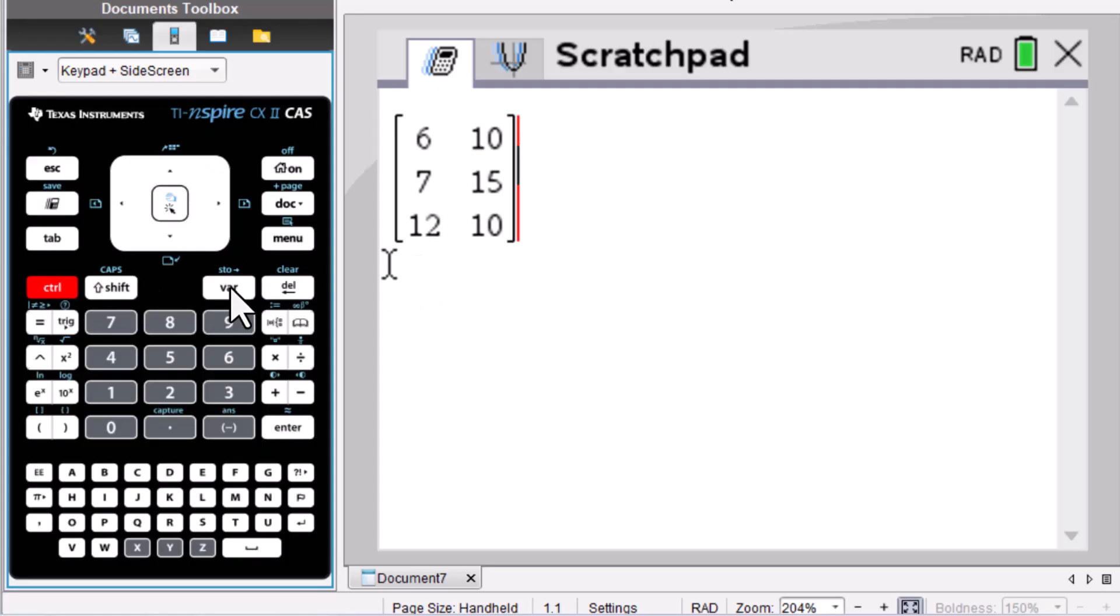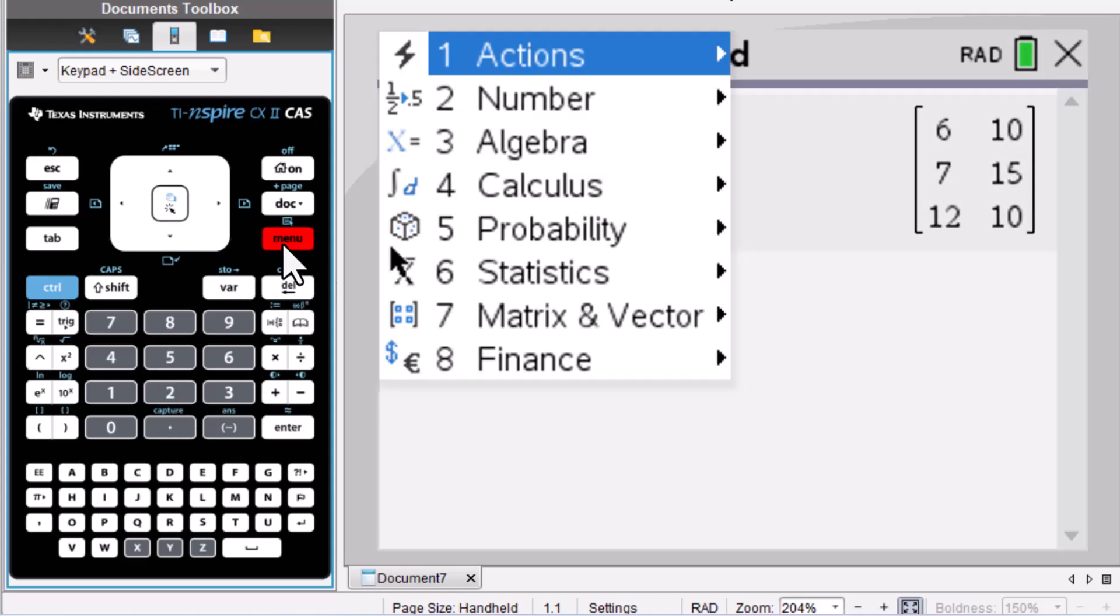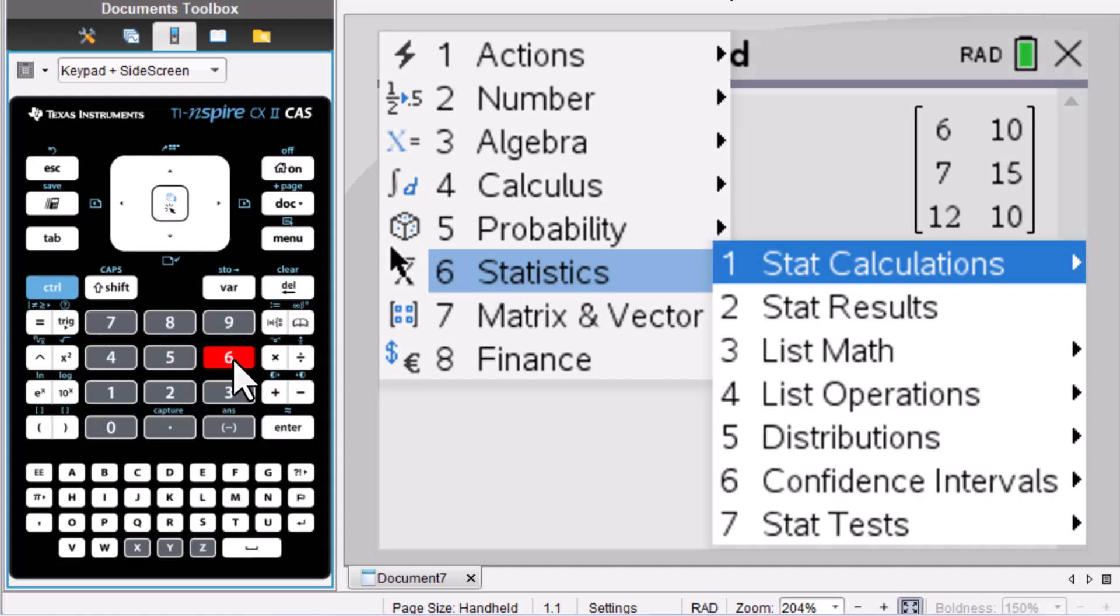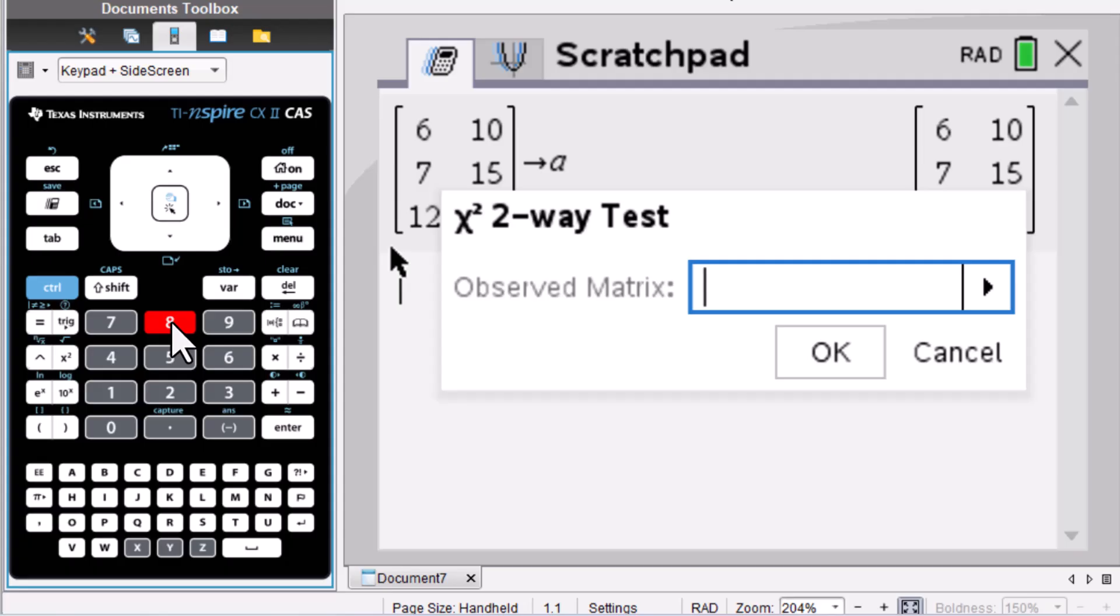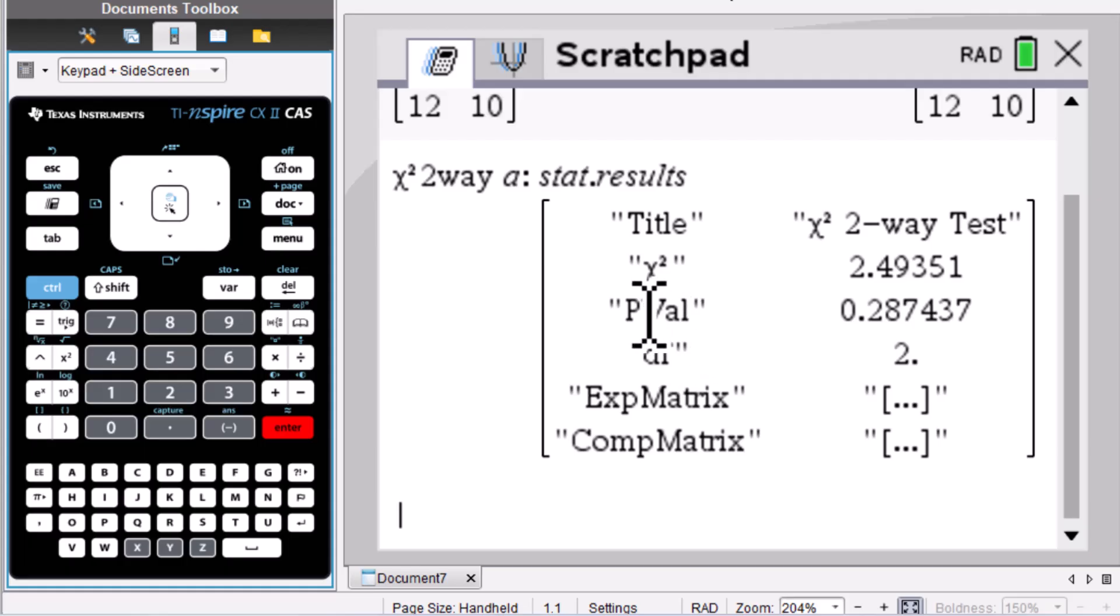Then store this matrix into A, control variables, A, enter. Then go to menu statistics 7, stats tests, chi-squared 2V test 8. Right arrow button, A, enter. We got chi-squared, p-value, and a degree of freedom.